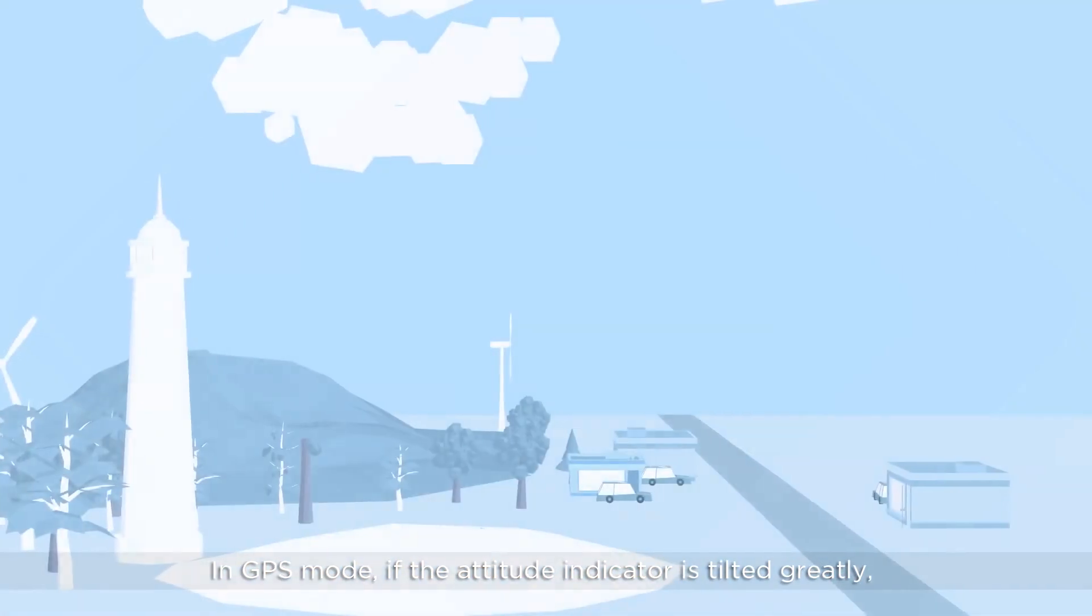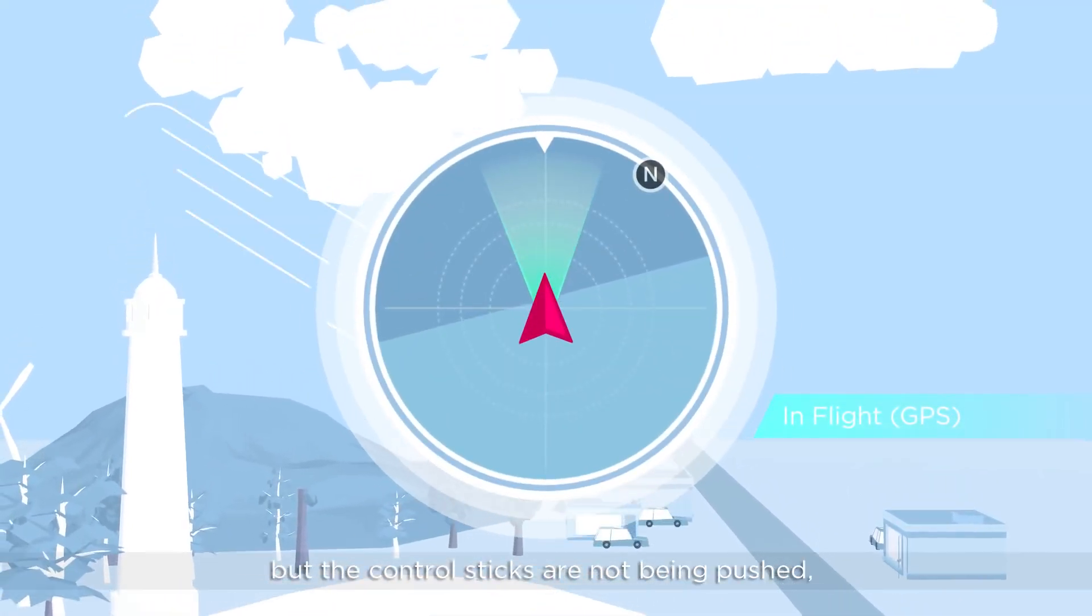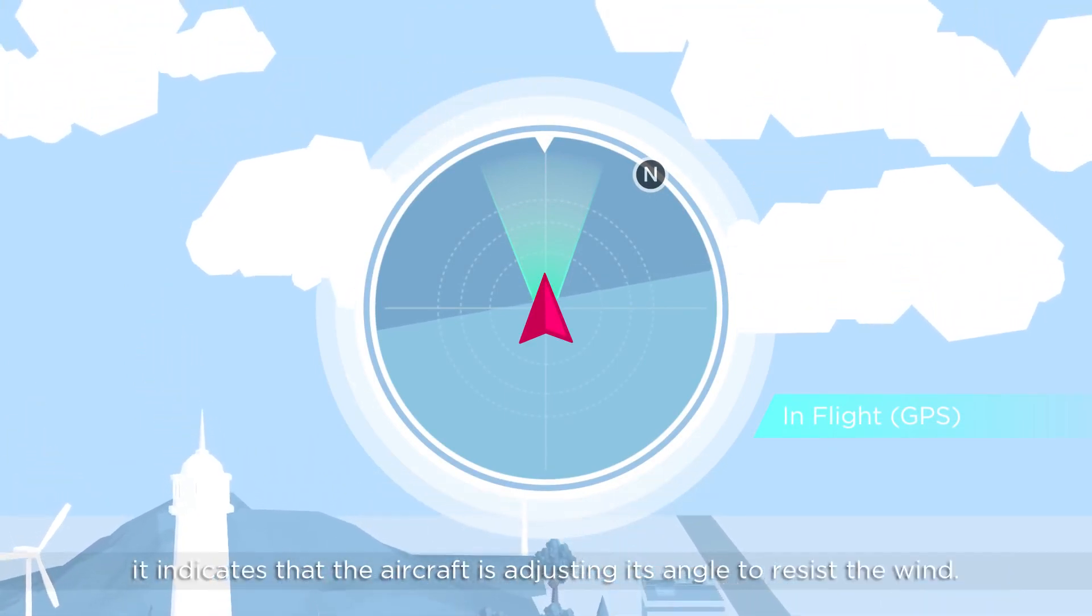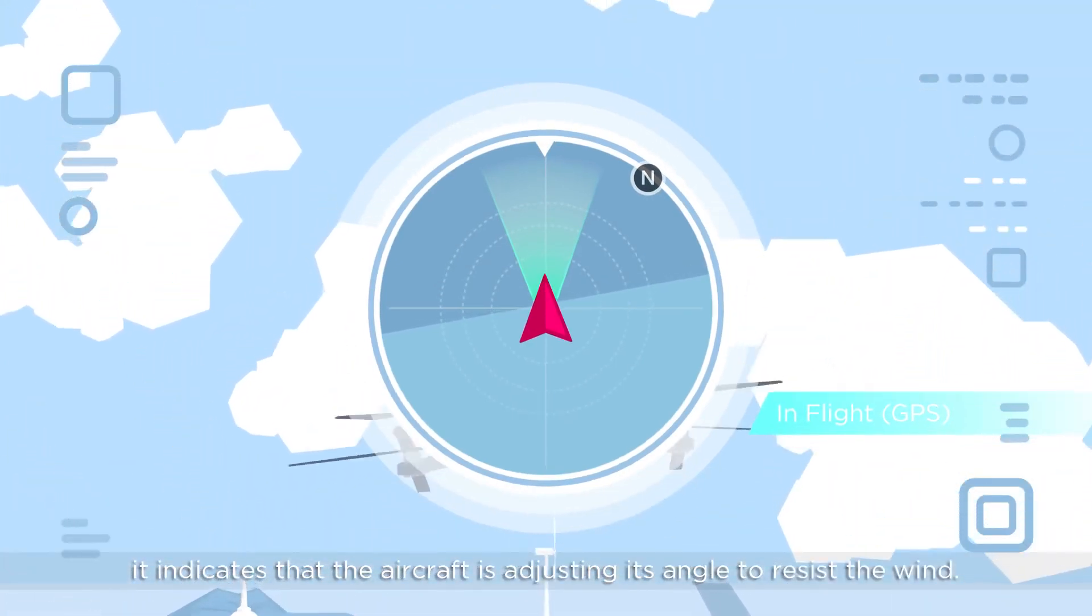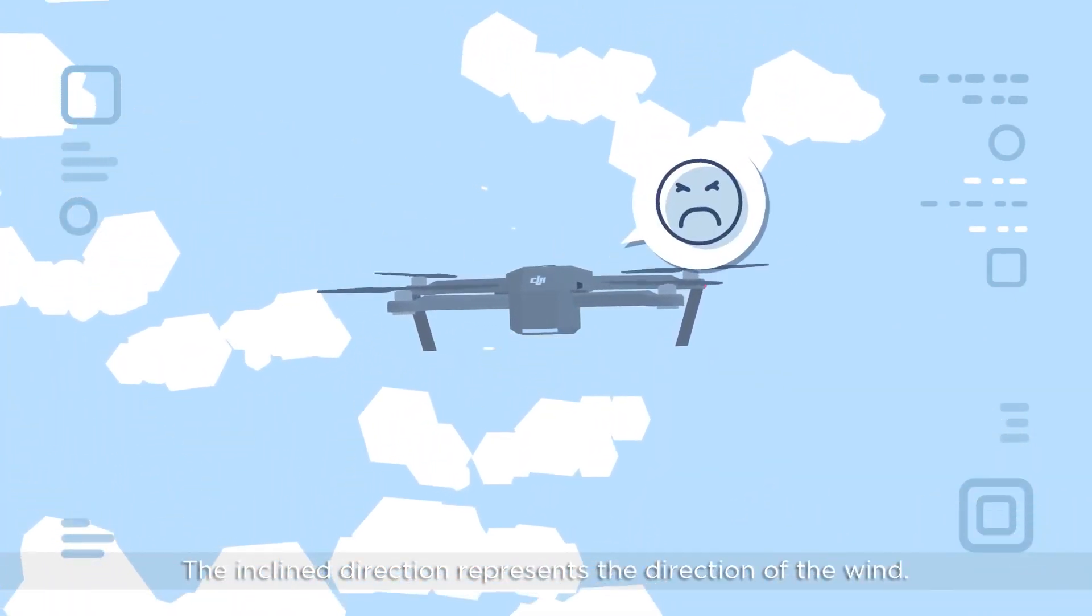In GPS mode, if the attitude indicator is tilted greatly, but the control sticks are not being pushed, it indicates that the aircraft is adjusting its angle to resist the wind. The incline direction represents the direction of the wind.